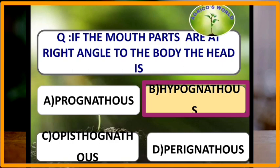If the mouthparts are at a right angle to the body, then the head is called hypognathous. In hypognathous type of head, the head remains vertical and is at a right angle to the long axis of the body, with mouthparts ventrally placed and projected downwards. This is also known as the Orthoptera type, found in grasshoppers and cockroaches.